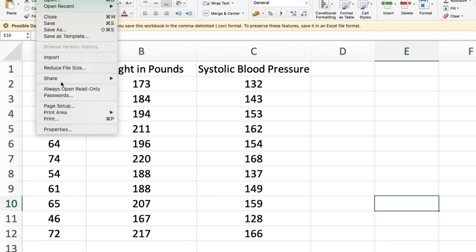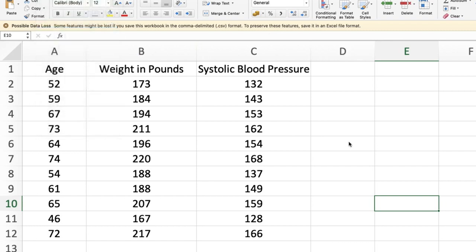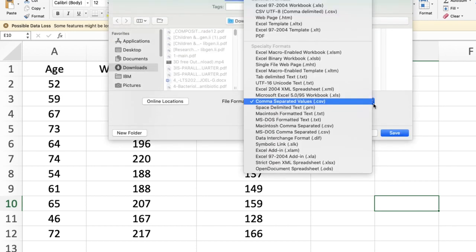So you click file, save as, and then pick the right file type for your data. And in this case, it should be in comma separated values.